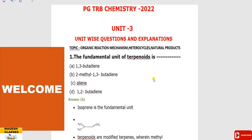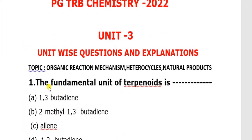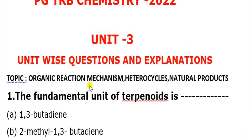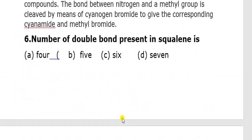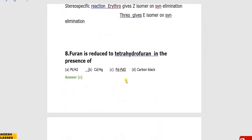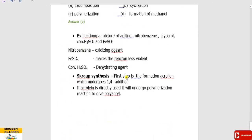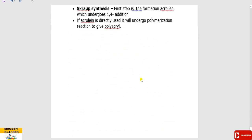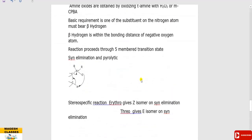Hello viewers, welcome to my guest chemistry classes. In this presentation, we will discuss PGT-ARB chemistry, unit number 3. The unit topic is organic reaction mechanism, hydrocycles and natural products. In 2022, we have a category of questions with answer key and data explanation in the presentation. Let us move into the question part.